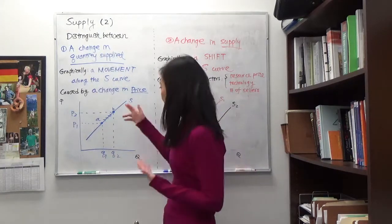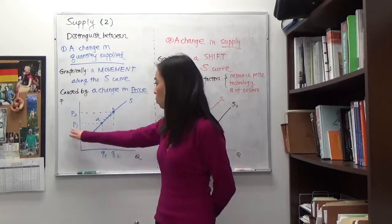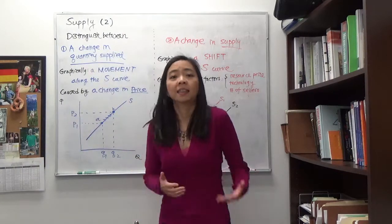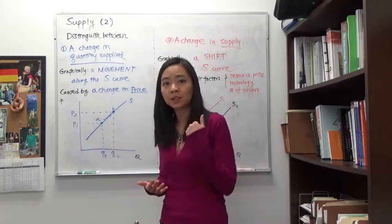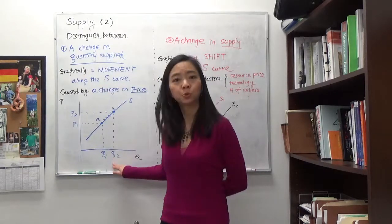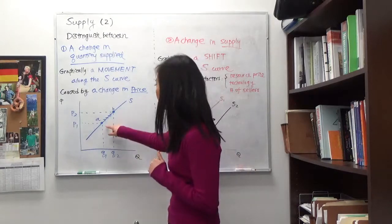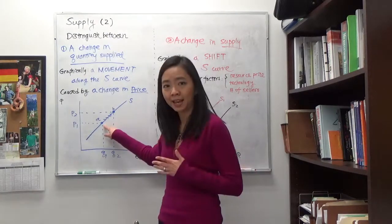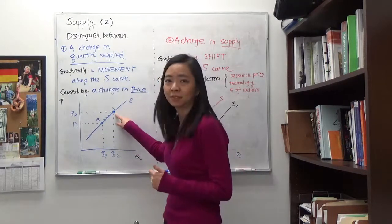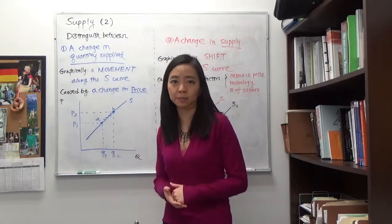So for example, if the price of the good changes from P1 to P2, then the quantity supplied of that good is going to go up from Q1 to Q2. And graphically, you're going to observe a movement along the same supply curve from point A to point B. So we call this a change in quantity supplied.